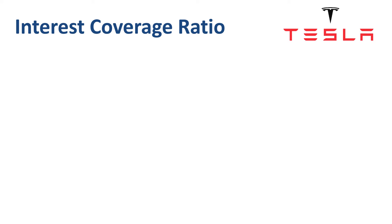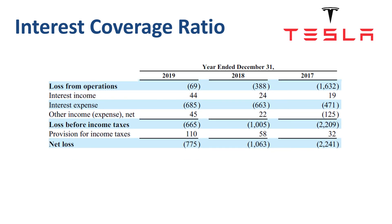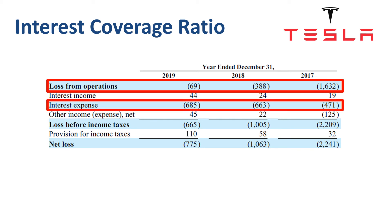Next up is Tesla, which is at a far earlier stage of business maturity than any of the businesses analyzed so far. The operating loss has been shrinking from 2017 to 2019 but has not yet turned positive. Hence, no interest coverage ratio can be calculated for any of these years.